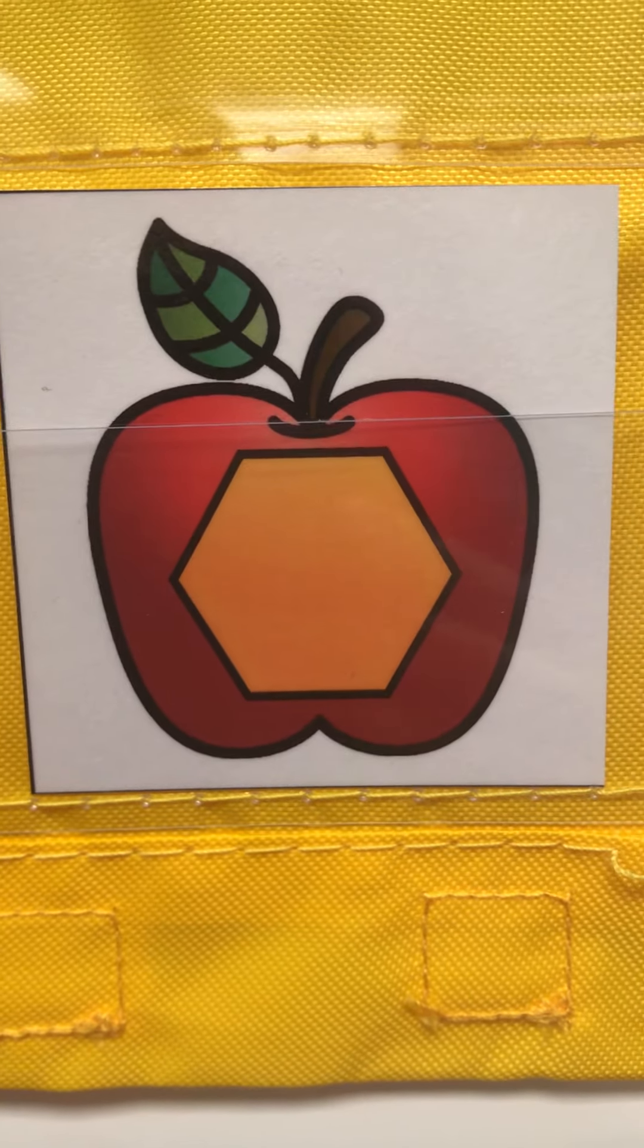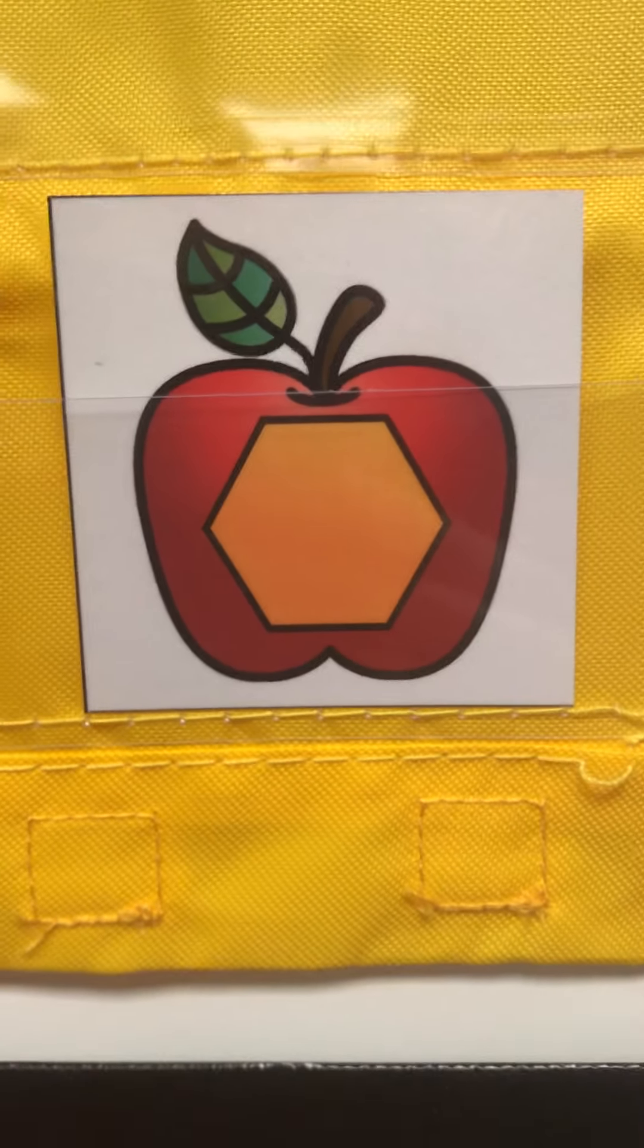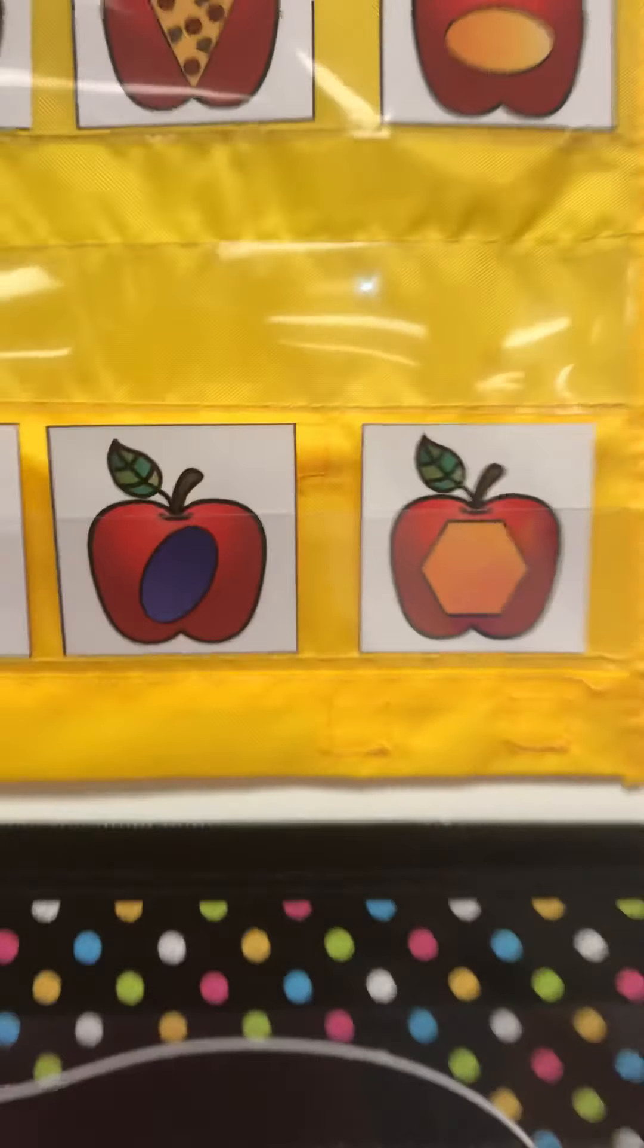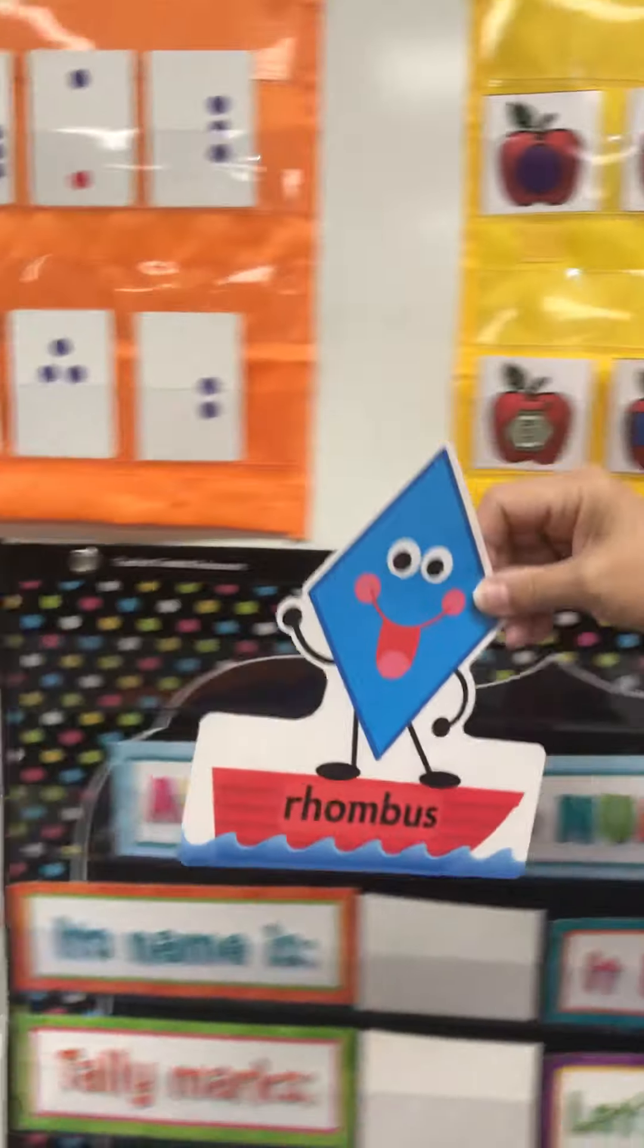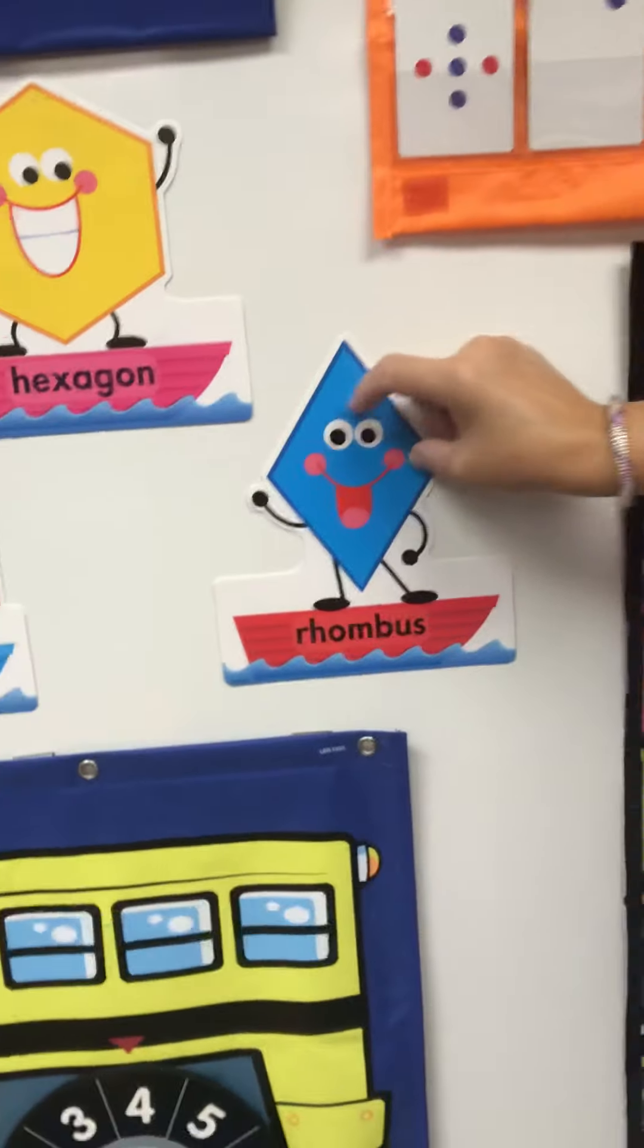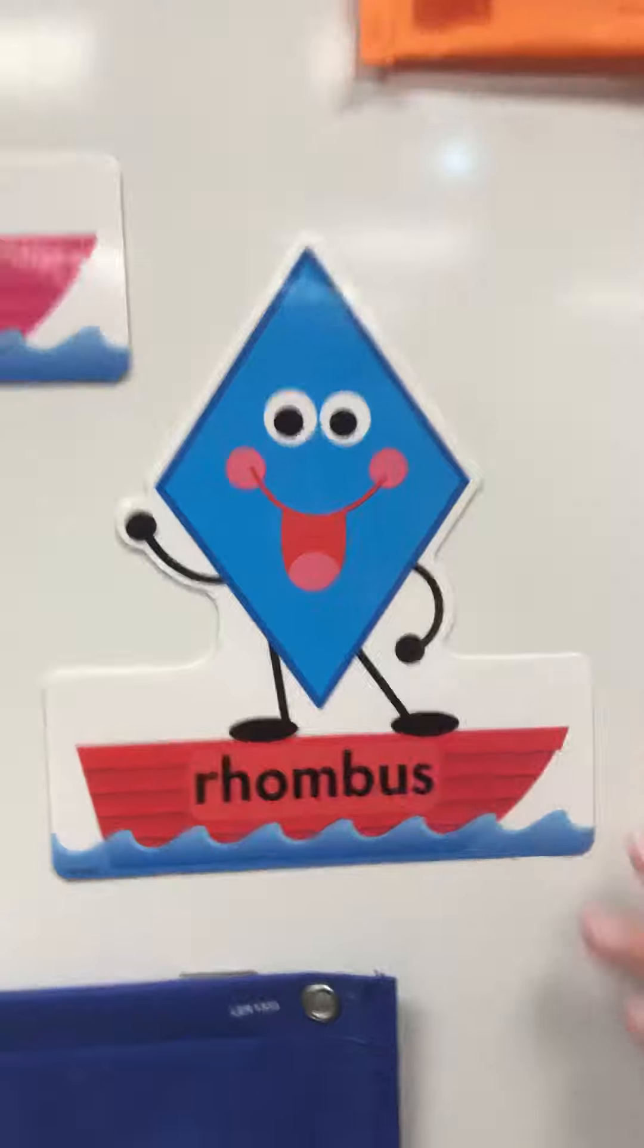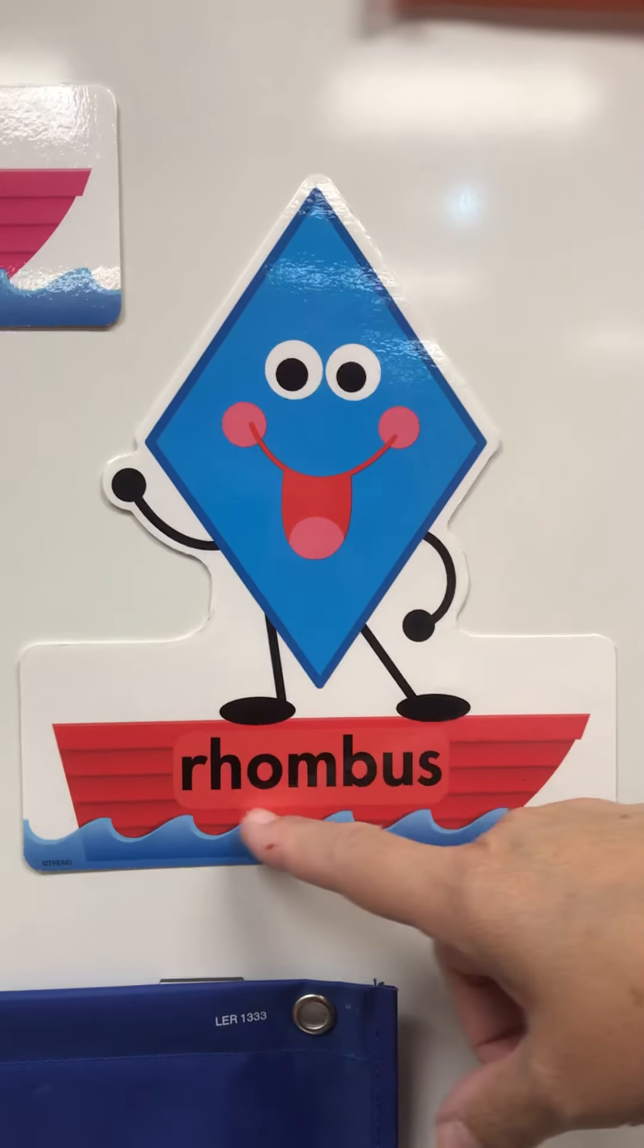And the last one? Oh, it's that one that has six sides again. Hexagon. And our new shape is a rhombus.